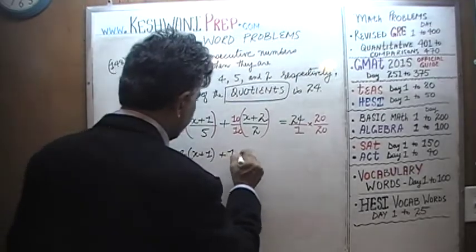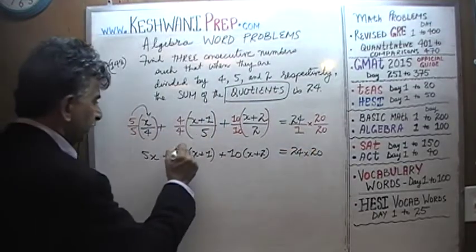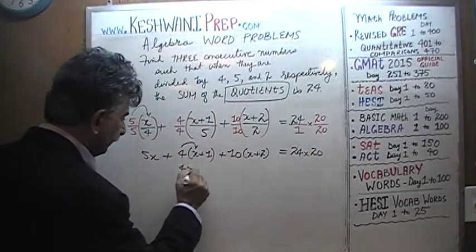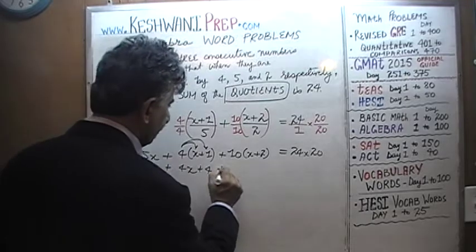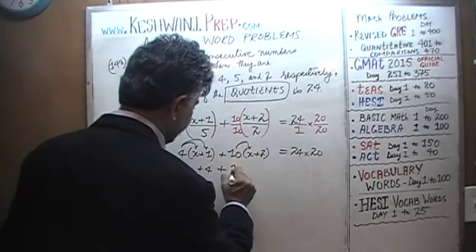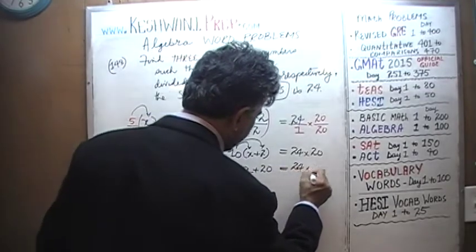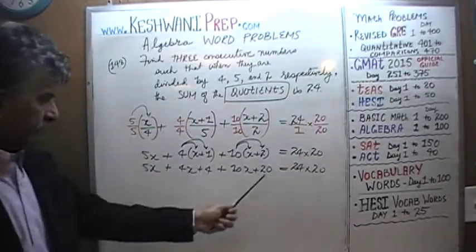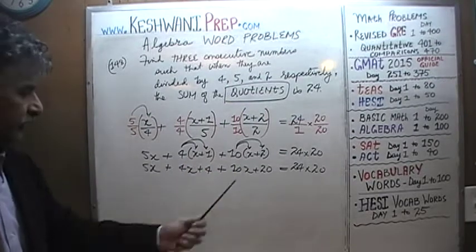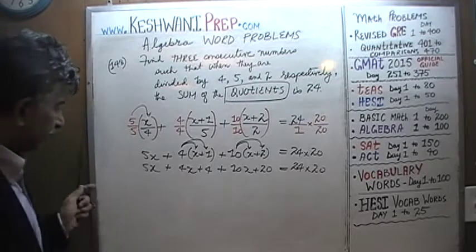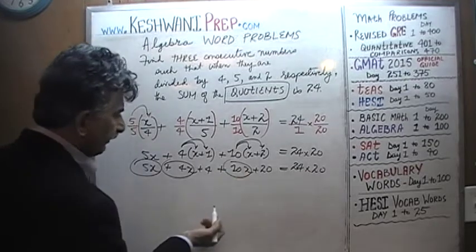Plus 10 times (x plus 2) has to equal 24 times 20. Expanding: we get 5x, then 4x plus 4, then 10x plus 20. Collecting like terms: 5x plus 4x is 9x, plus 10x gives 19x. The constants are 4 plus 20 equals 24.